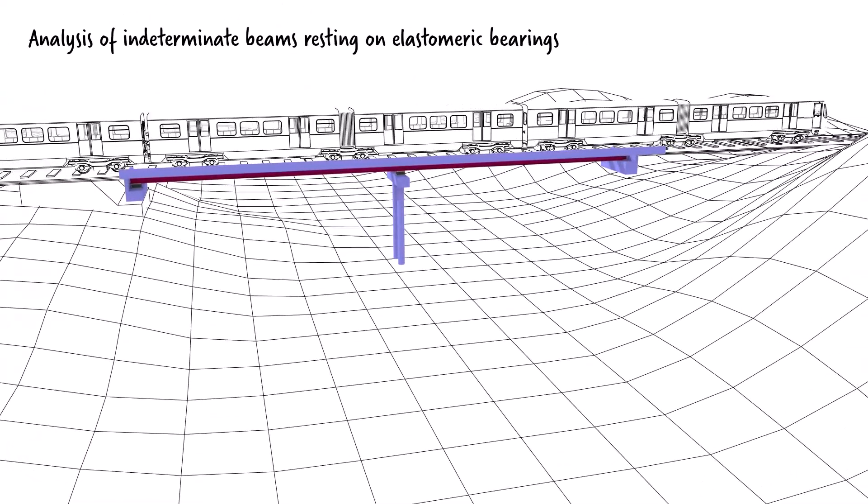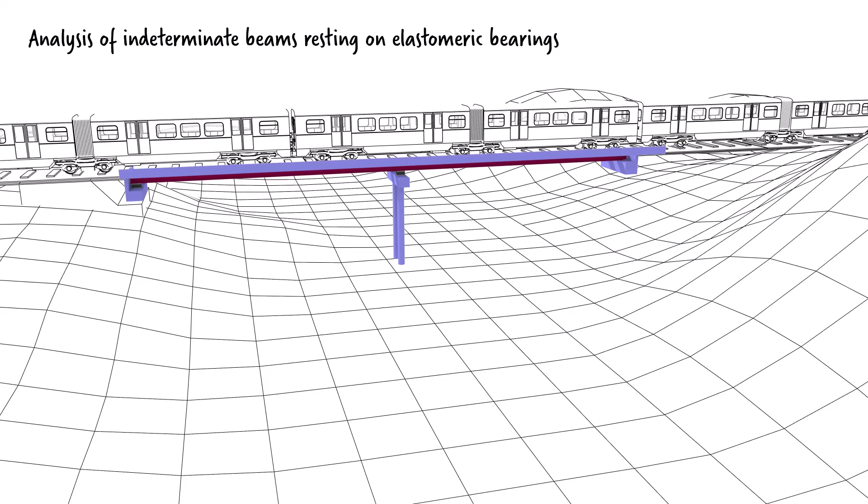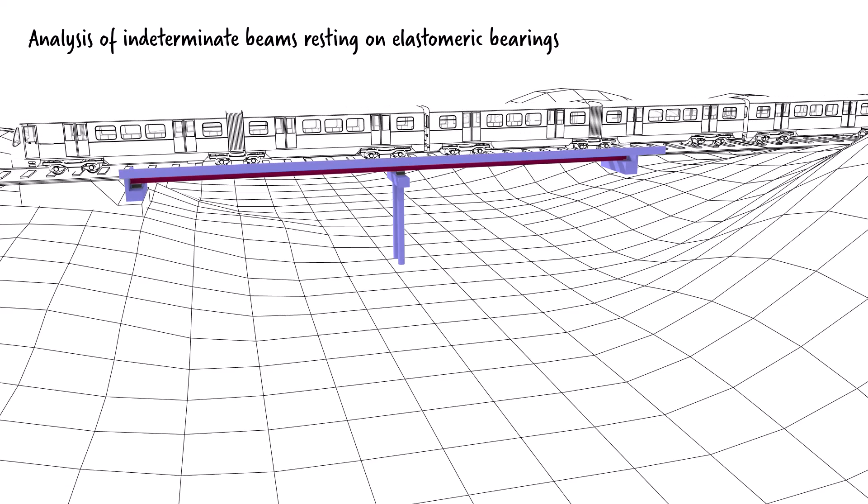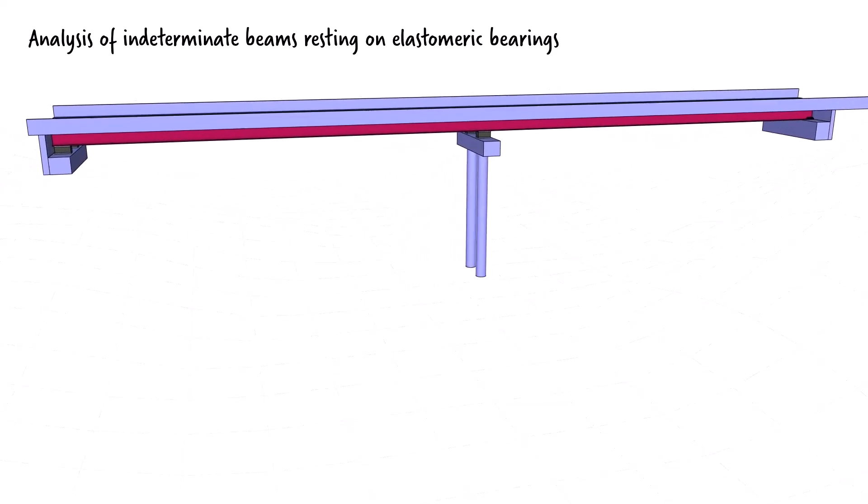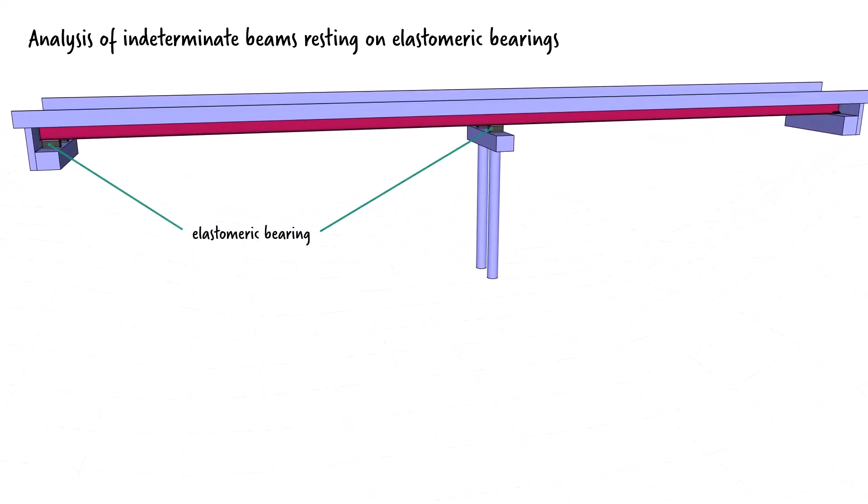Analysis of indeterminate beams with elastomeric bearings. Consider a two-span railroad bridge. The bridge is supported by elastomeric bearings at the left end and an interior point. The right end is anchored by a pin support.